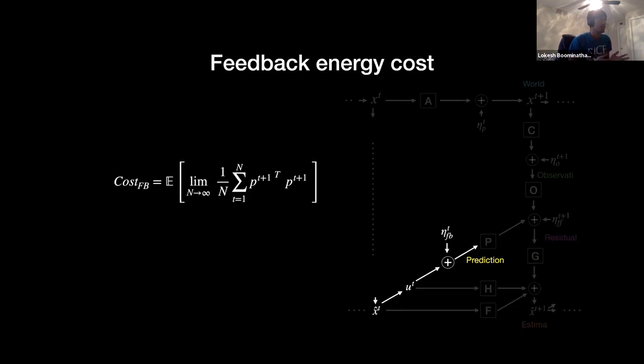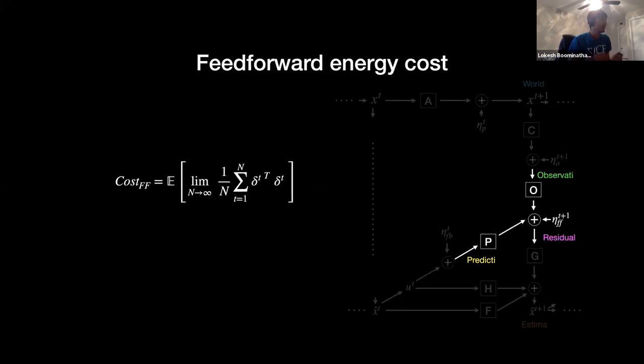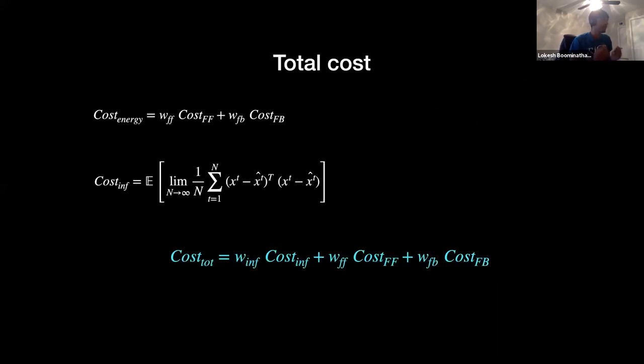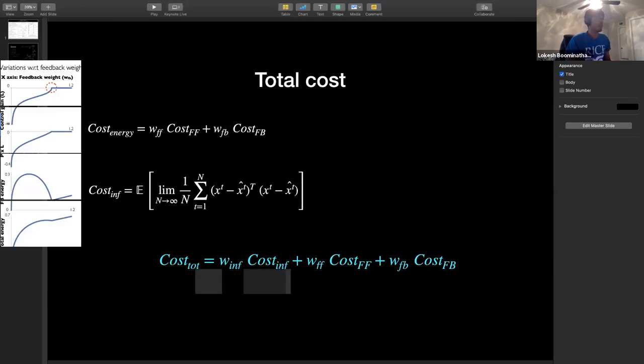So the constraints, the kind of constraints that I was talking about is first the feedback energy cost which over here is nothing but an average L2 norm of the predictions that I send. And the second is the feed-forward energy cost which is the average L2 norm of the residuals. And our ultimate goal is to have good inference which is the average difference between the estimate and the actual world state, and my total cost would be a linear combination of these three costs. And that's the problem set that we are looking at.